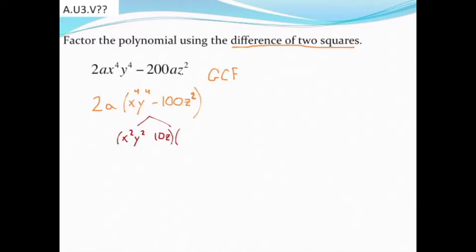And you'll have two sets of parentheses. They're going to be identical to each other, with the only difference being one will have a plus sign and one will have a minus sign. So I'm going to factor this down into x squared, y squared plus 10z and x squared, y squared minus 10z. Don't forget to bring down your GCF along with that so that 2A will be in front.